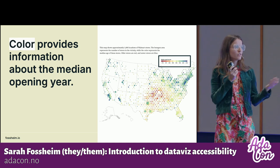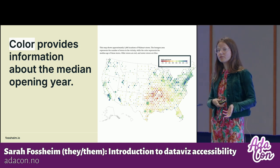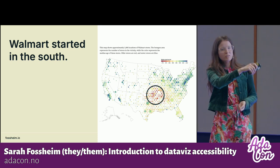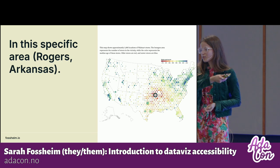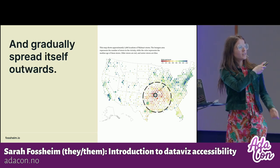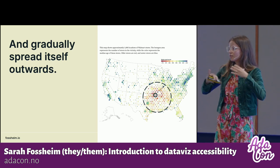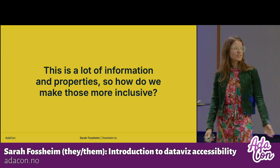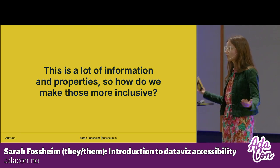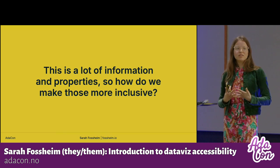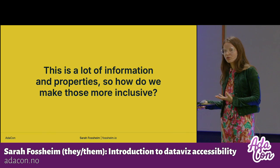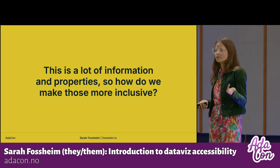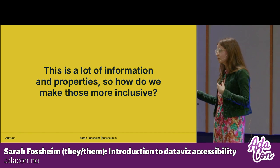Additionally, color encodes information: the more red a dot is, the older the median age of stores in that area; the more green or blue, the younger. So I can tell Walmart started in the south — specifically in Arkansas — and that stores gradually spread in a radius throughout the US, then to the East Coast and eventually the West Coast. That's a lot of visual properties combined to tell both high-level summaries and very detailed insights.